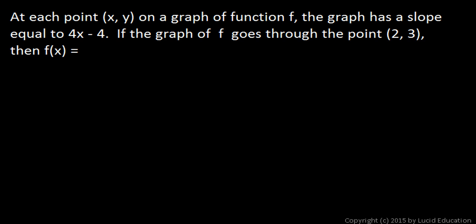Here's a problem involving a derivative, which we solve with an indefinite integral. We're told that at each point (x, y) on a graph of function f, the graph has a slope equal to 4x - 4. So that's the derivative of function f. We're told that the graph of f goes through the point (2, 3), then f(x) equals what? We need to find function f(x).